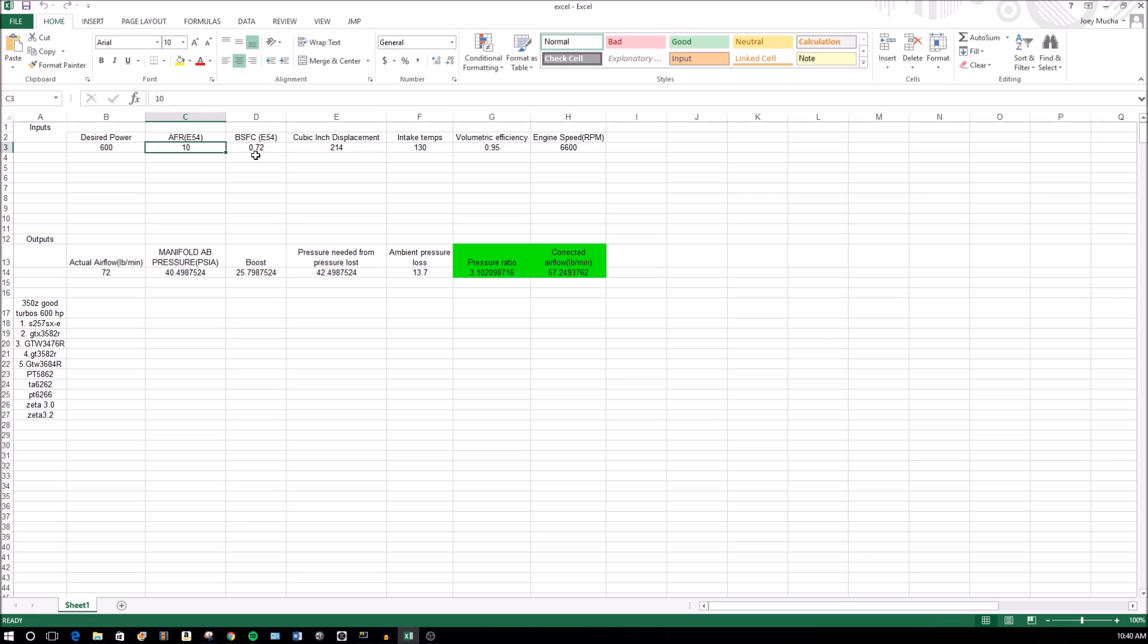Brake specific fuel consumption I again estimated. I believe it's like 0.654 for E85, and this is for a turbo, so I just put 0.72. I know it was right in between gasoline and E85. Again, I estimated that because I'm going E54.